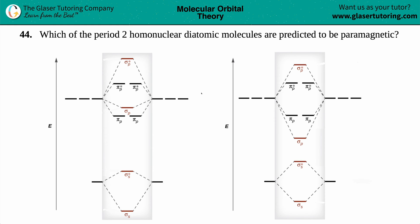Number 44. Which of the period 2 homonuclear diatomic molecules are predicted to be paramagnetic? There's a lot here because we're discussing all of period 2.